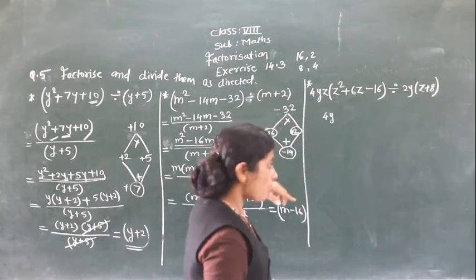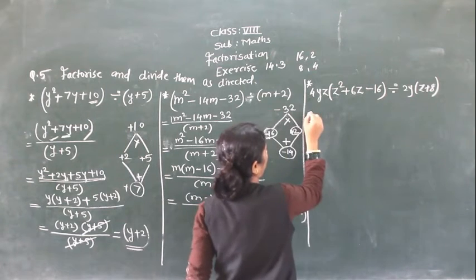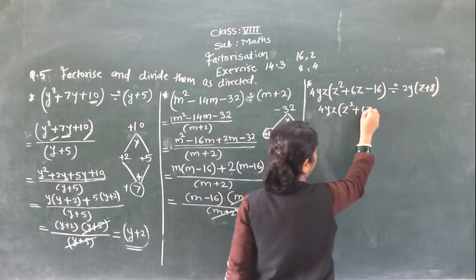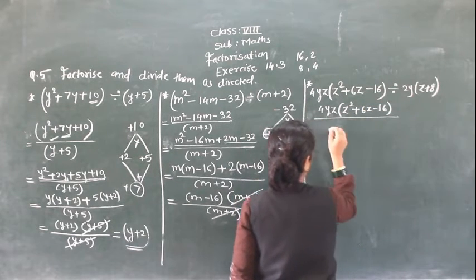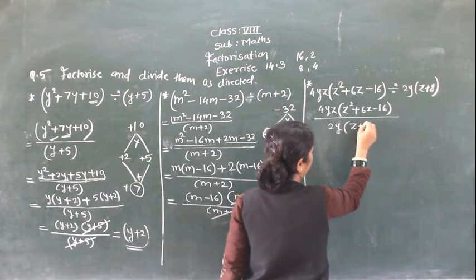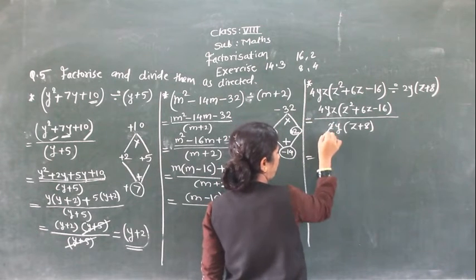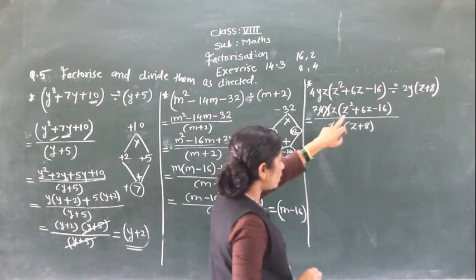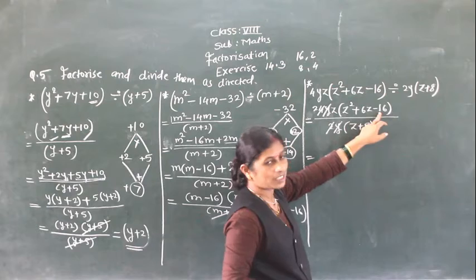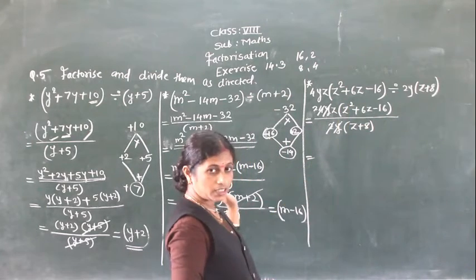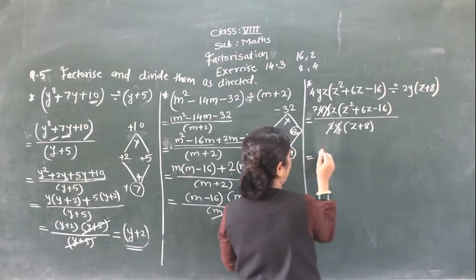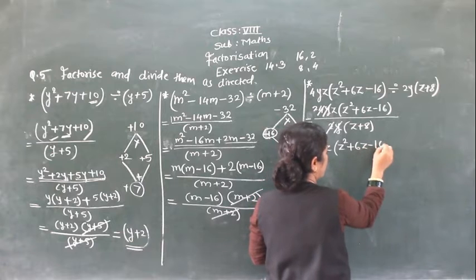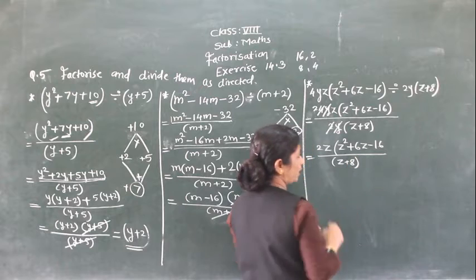Now you will see this example: 4yz in bracket (z square plus 6z minus 16) upon 2y in bracket (z plus 8). So here, 2 and 2 get cancelled — 2 twos are 4 — and y gets cancelled. So what is remaining in the numerator: 2z. Now this comes in this form: z square plus 6z minus 16. We have to find factors. So remaining: 2z in bracket (z square plus 6z minus 16) upon (z plus 8).